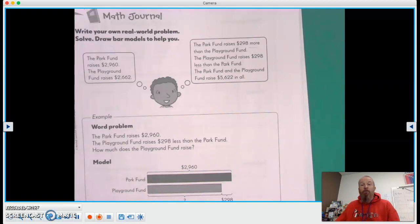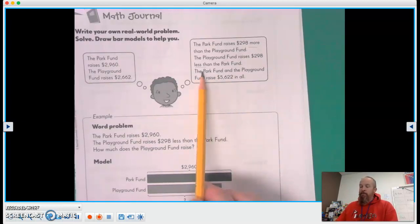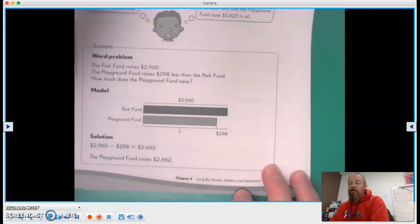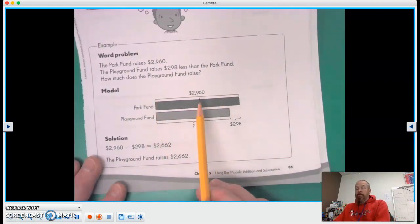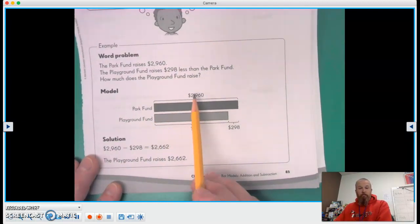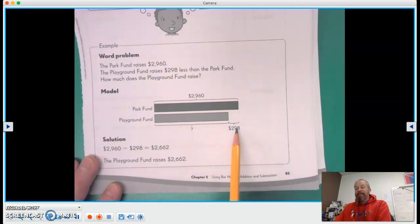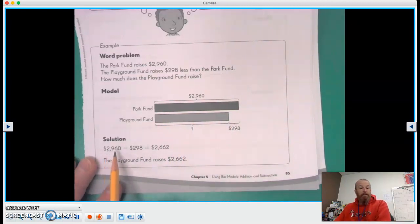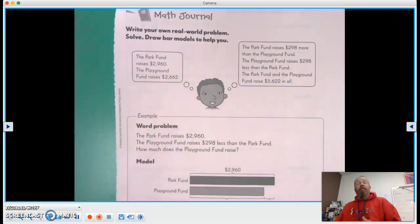One is the park fund raises more, the other is the playground fund raises less. They also added a third piece that says the park fund and playground fund raise $5,622 altogether. So what they ended up using was the $2,960 for the park fund and the $298 less than the park fund. We had to figure out what the playground fund was. So they wrote it out: $2,960 minus $298 equals $2,662. They already know all the information, but they get to be the teacher, right? They're going to create this math problem.